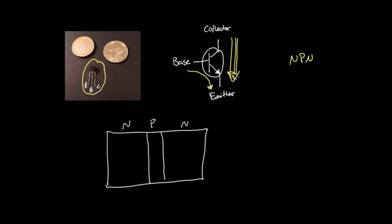There's something confusing about the way this diagram is drawn with this arrow. In circuit diagrams, a lot of engineers like to think about positive current flow — current flowing from positive to negative — when in reality it's the electrons that flow from negative to positive. It doesn't really matter which convention we use, but when we look at what's going on inside the transistor, it's easier to think in terms of the direction the electrons are flowing.